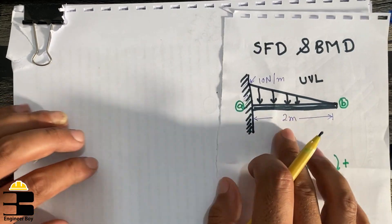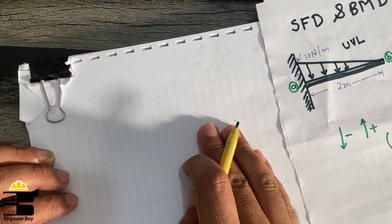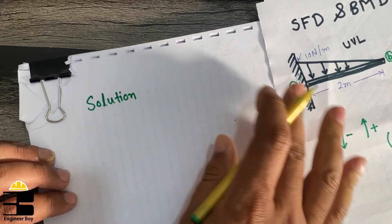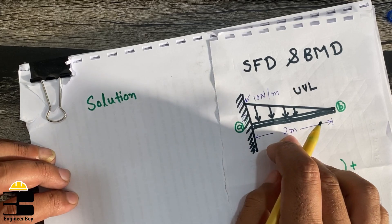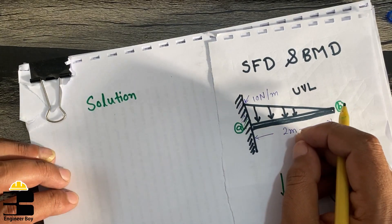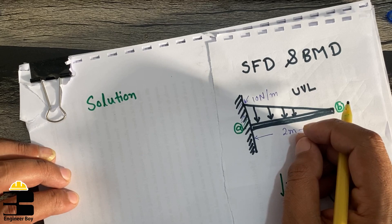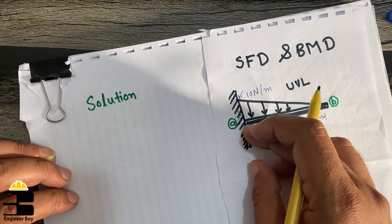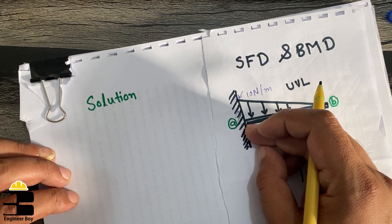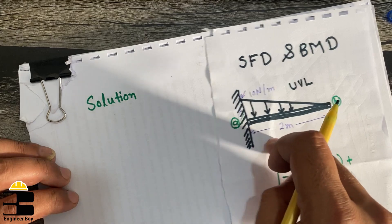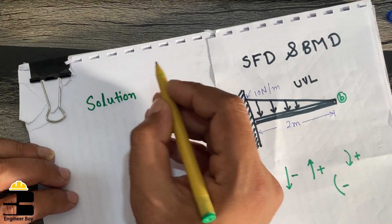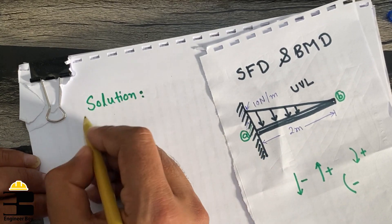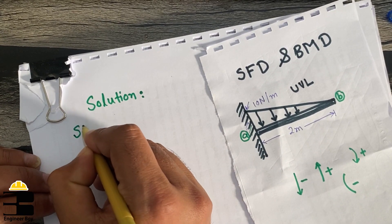This is a UVL, so let's go ahead to the solution. This is a cantilever beam, which is a determinate structure because we can fully analyze it with equilibrium equations — we have only three unknowns and three equilibrium equations. So let's do the calculation for the SFD.